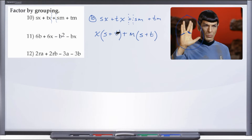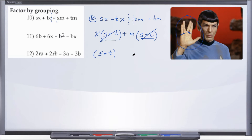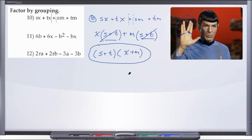Now that we've factored each side, you'll notice that what's inside both sets of parentheses is identical — and that's important. When you are factoring by grouping, if your sets of parentheses don't match, you've done something wrong; they have to be identical. So now we take that matching set of parentheses and bring it down, crossing out the duplicates. What's left is x plus M. So we've factored our original expression into (S plus T) times (x plus M).